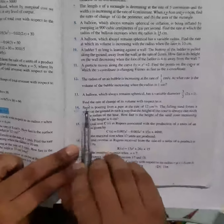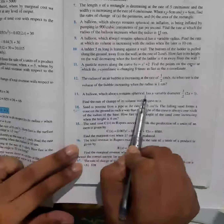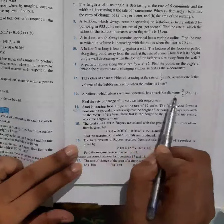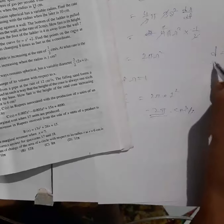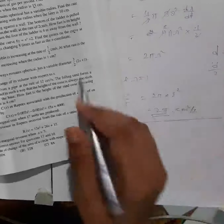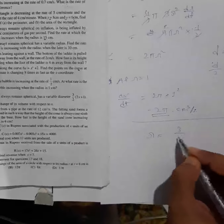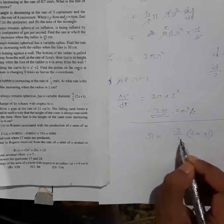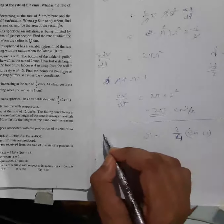Question 13: a balloon which always remains spherical has a variable diameter. We know diameter is twice the radius, so radius = diameter/2. In this case, the radius will be (3/2)(2x+1) divided by 2, which gives r = (3/4)(2x+1).